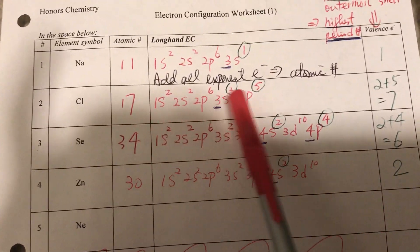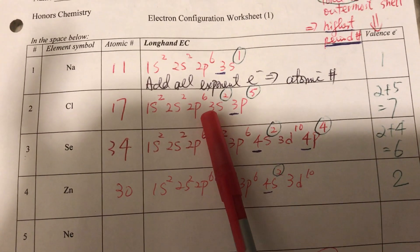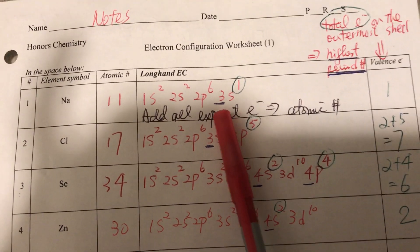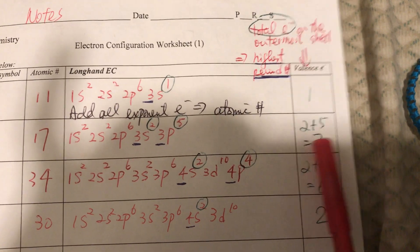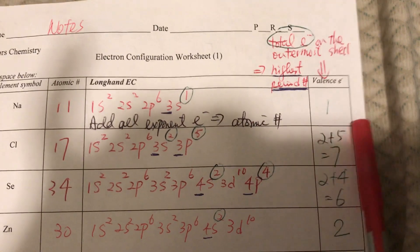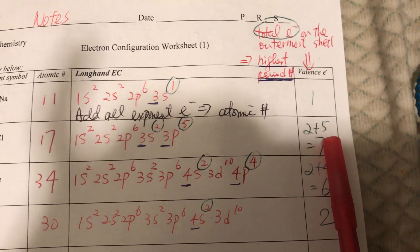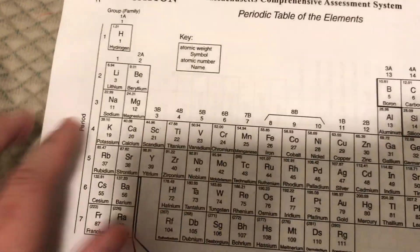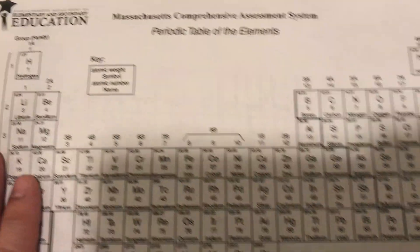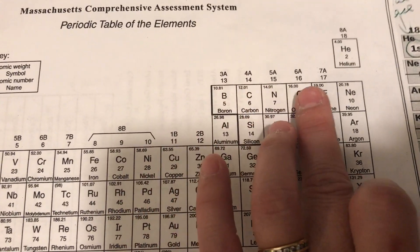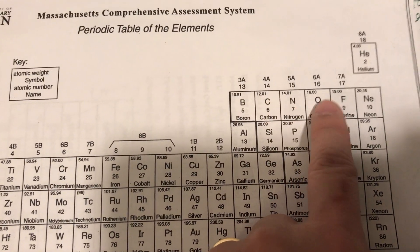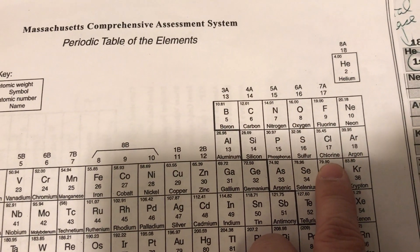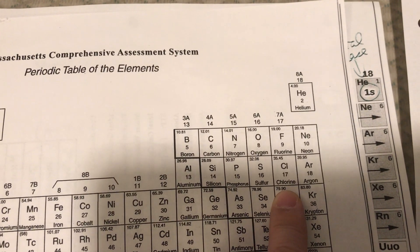For chlorine, the highest energy level is three, so we underline both threes. We have two from s and five from p, and we write two plus five equals seven. We don't write just seven — we write two plus five to show where they come from. Chlorine is in column seven, confirming it has seven valence electrons: two from s and five from p.